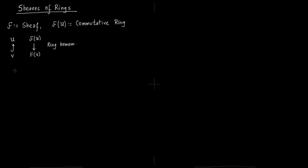F of U is a ring, F of V is a ring. A ringed space is a topological space X equipped with a sheaf of rings. This space X has a sheaf of rings on it, and this sheaf is called the structure sheaf of X.